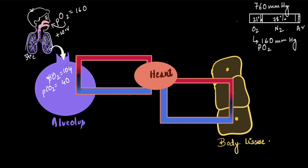Water vapor explains the drop in pO2, but not the rise in CO2. The increased carbon dioxide pressure in the alveolus comes from the body itself — tissues continuously produce carbon dioxide, which is released by the blood into the alveolar cavity. Even after a forceful exhalation, the alveolus is never completely empty and always retains air containing CO2, which is why pCO2 in the alveolar cavity is 40 mmHg.